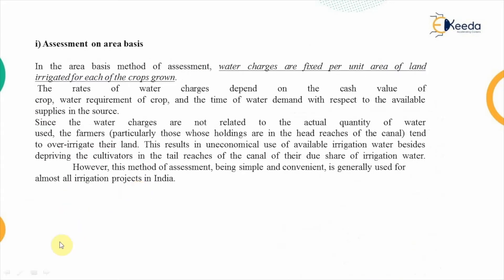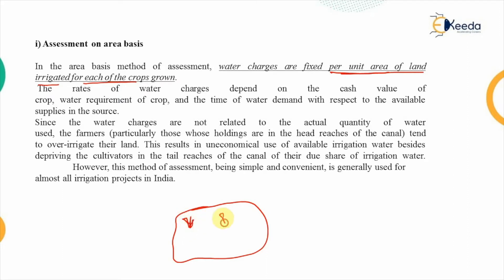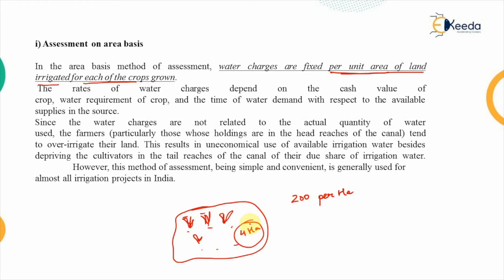The first method is assessment on the area basis. In this, the water charges are fixed per unit area of land irrigated for each crop grown. For example, in a particular season with a crop of potatoes, the water charges may be set at 200 rupees per hectare. If the area being irrigated is four hectares, the total water cost for the farmer that season will be 800 rupees.